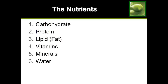Now that we understand the importance of nutrition, we can look at the nutrients. Our nutrients are divided into six main classes: carbohydrates, protein, lipid — which is the scientific word for fat — vitamins, minerals, and water. We can also categorize these into other subcategories.